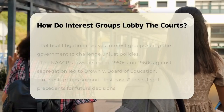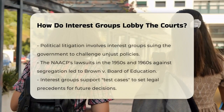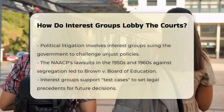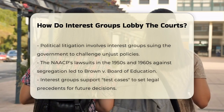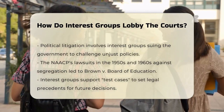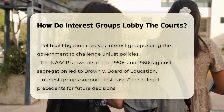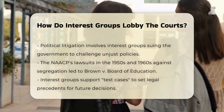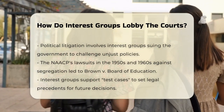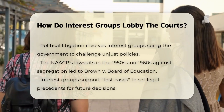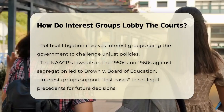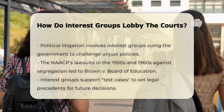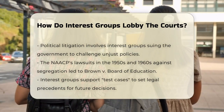Another way interest groups lobby the courts is by filing lawsuits themselves. This is known as political litigation. Here, an interest group might sue the government to challenge a policy or law they believe is unjust or unconstitutional. A classic example is the NAACP's efforts in the 1950s and 1960s to challenge segregation in public schools, which led to the historic Supreme Court ruling in Brown v. Board of Education.